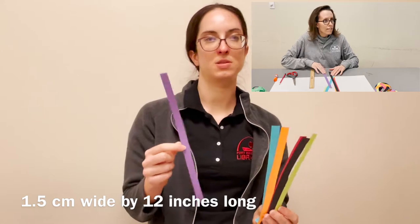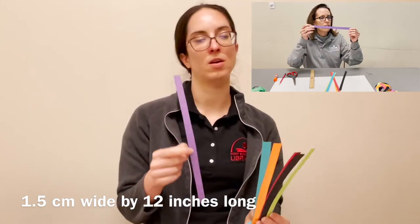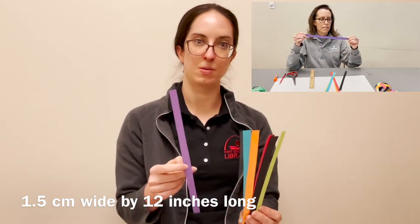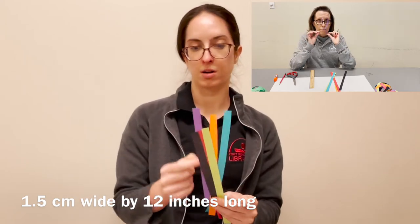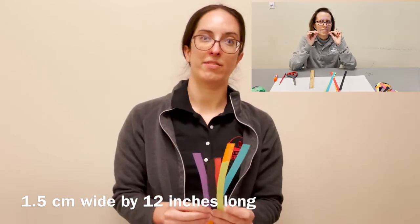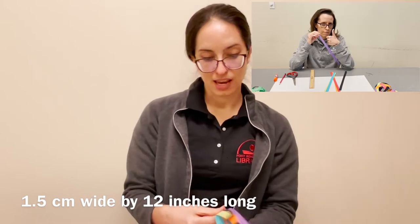These strips need to be about 20 times as long as they are wide. So if you're working with 9 by 12 inch construction paper and you want them to be 12 inches long, make them a centimeter and a half wide.